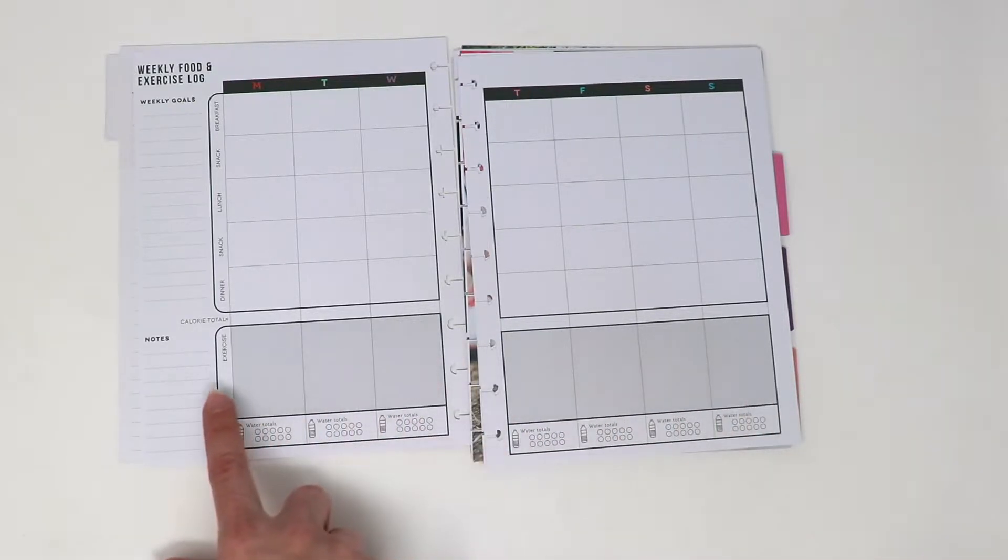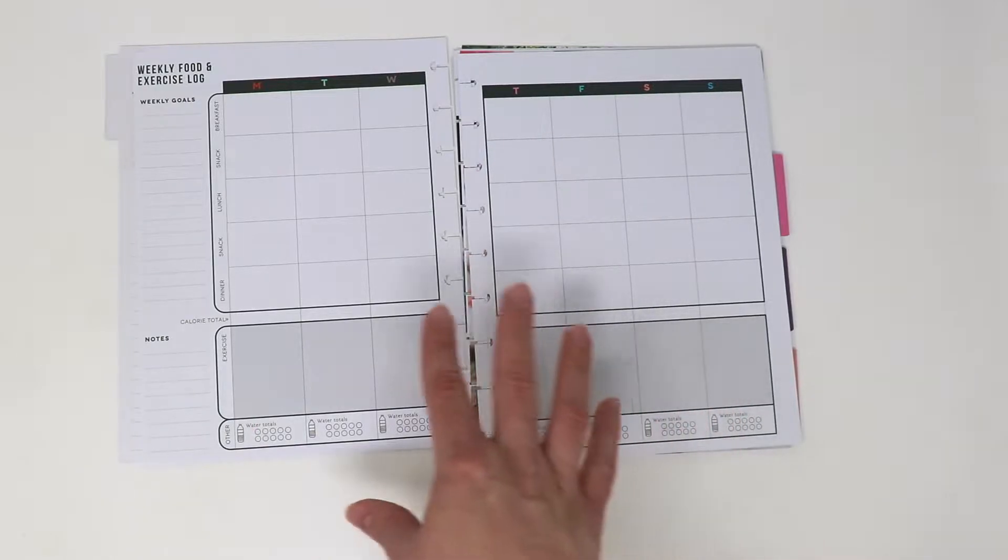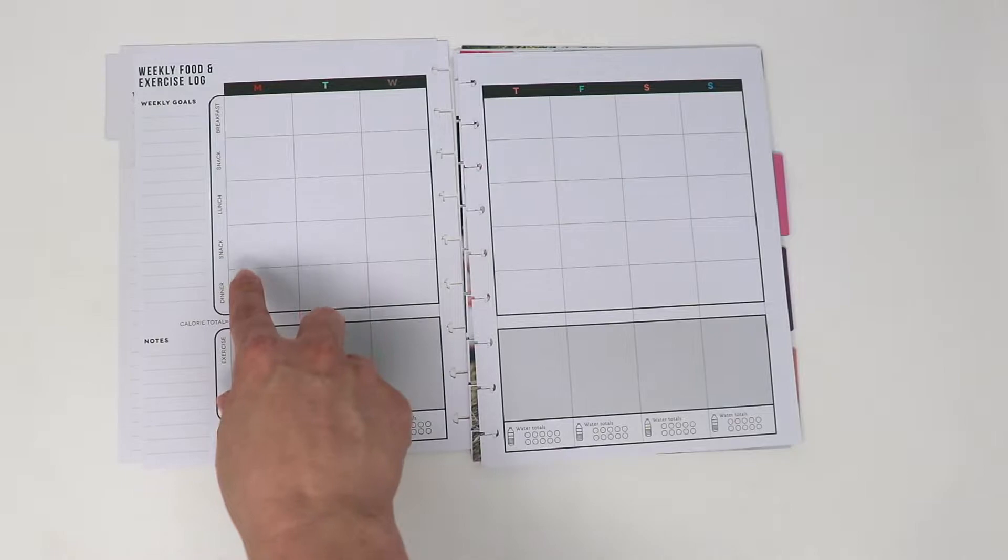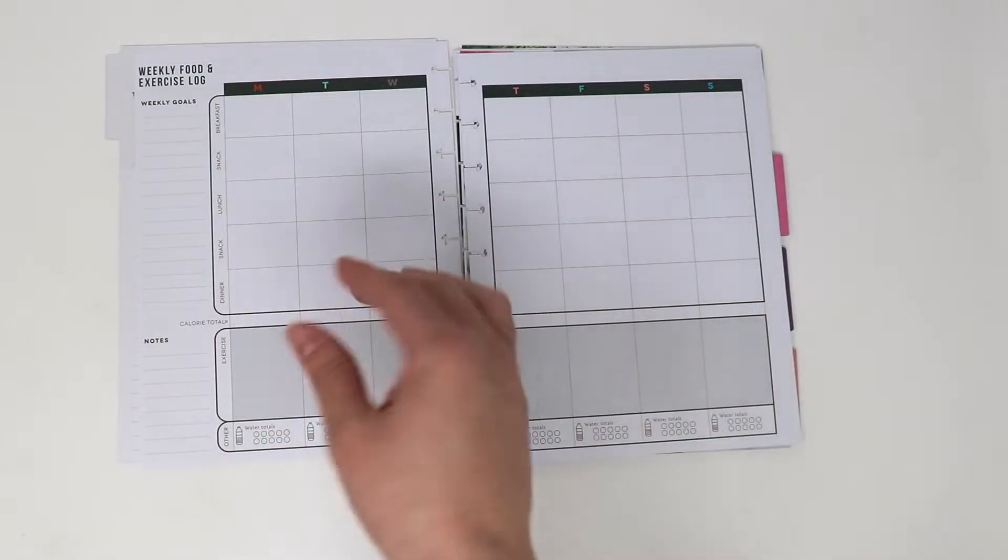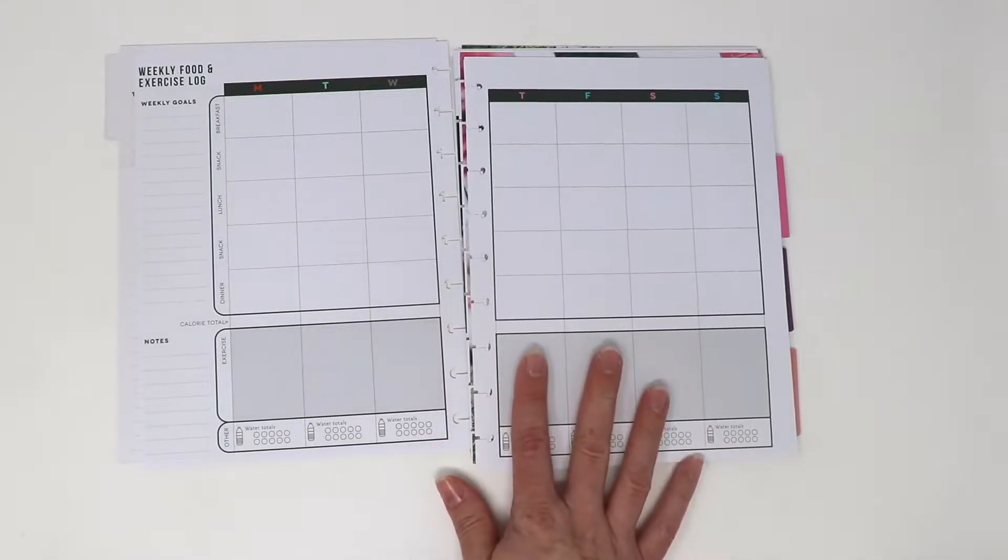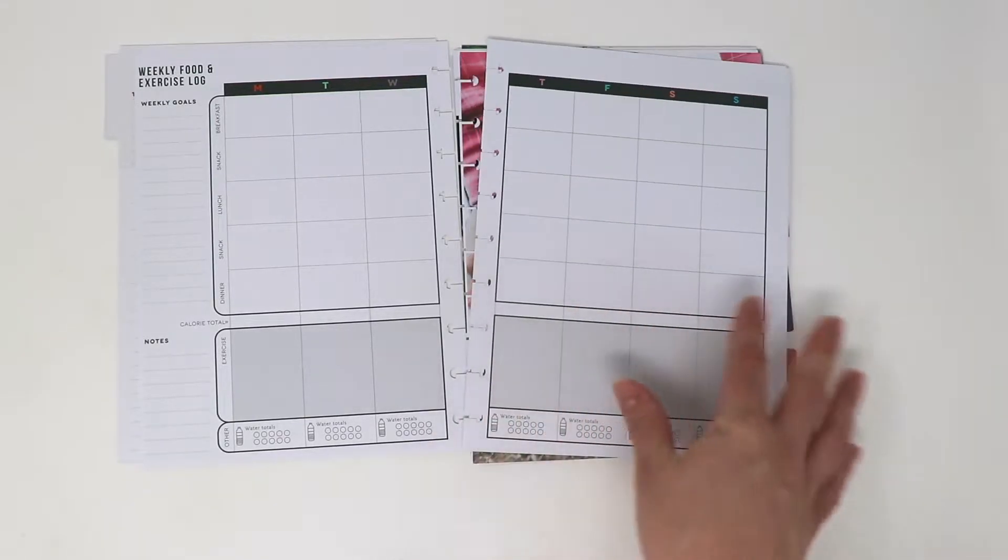Here they show you exercise, and then this is designed for you to put down your food log - what you've eaten for breakfast, lunch, dinner and snacks and all that. But I don't think I'll be using this because for me it's not very helpful to be writing down all the food that I've been eating.